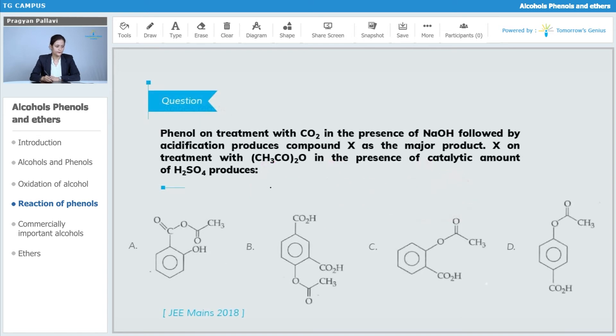Let us see the question here. Phenol on treatment with CO2 in presence of sodium hydroxide followed by acidification produces compound X as the major product. X on treatment with acetic anhydride in presence of catalytic amount of H2SO4 produces which of the following compound.